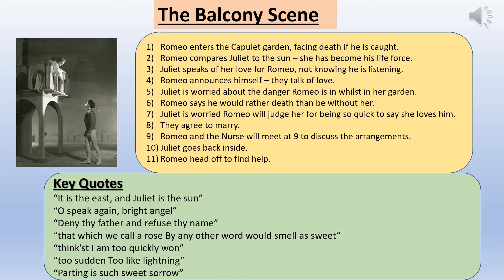A quick recap because it is nearly two weeks since you were doing the balcony scene. I'll just read through my eleven quick events. Romeo enters the Capulet garden, facing death if he is caught — he is trespassing. Remember Tybalt wanted to kill him on the spot because he'd arrived at the party, so it would be a double insult if he were found in the garden that evening as well. Romeo compares Juliet to the sun — it's like she has become his life force. She's very bright, very warming; she is the thing that allows him to live.